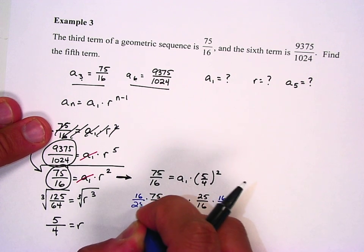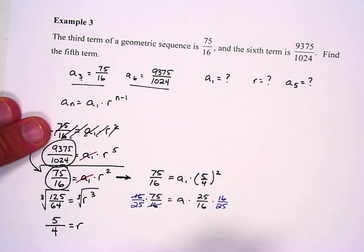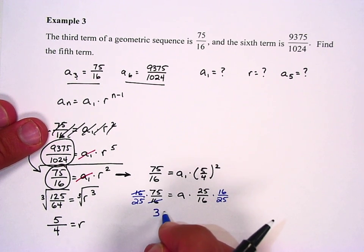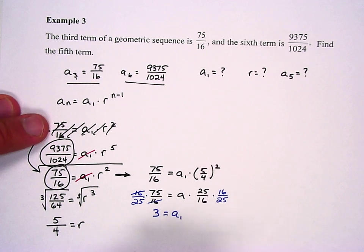And that cancels the 16s there, and I have 75 over 25, which is 3. So my first term is 3.